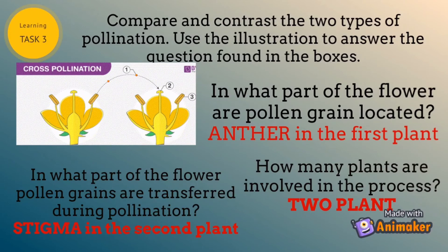In what part of the flower are pollen grains located? Answer: in the first plant. In what part of the flower are pollen grains transferred during pollination? Answer: stigma of the second plant. How many plants are involved in the process? Answer: two plants are needed in the process.